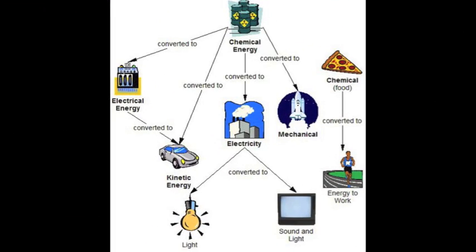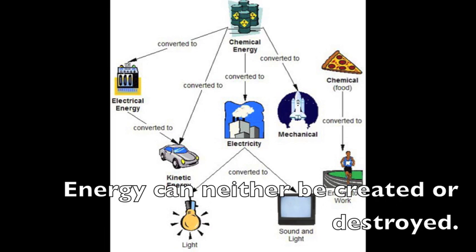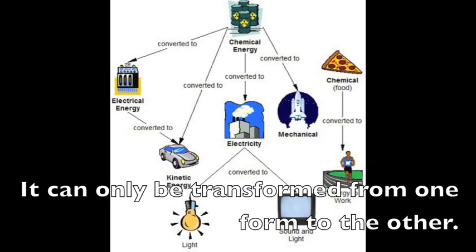So, as you can see, energy can change from one form to the next. The law of conservation of matter states that energy can either be created or destroyed. It can only be transformed from one form to the other.